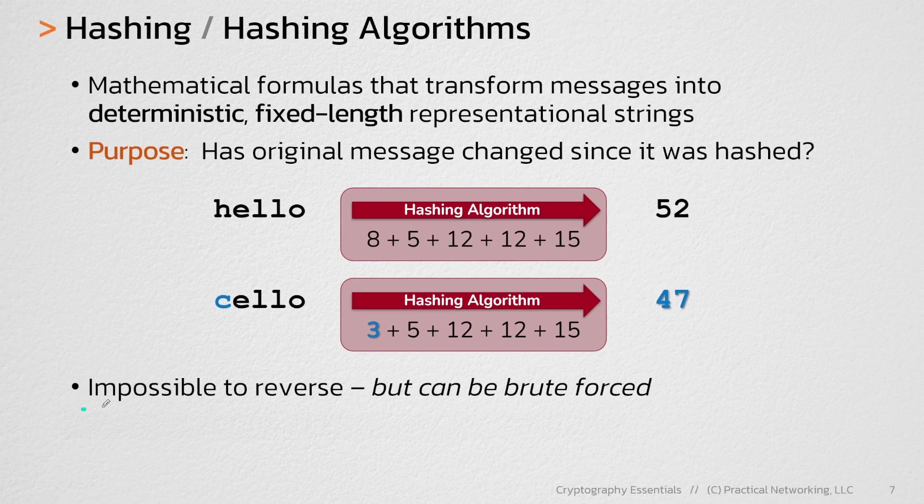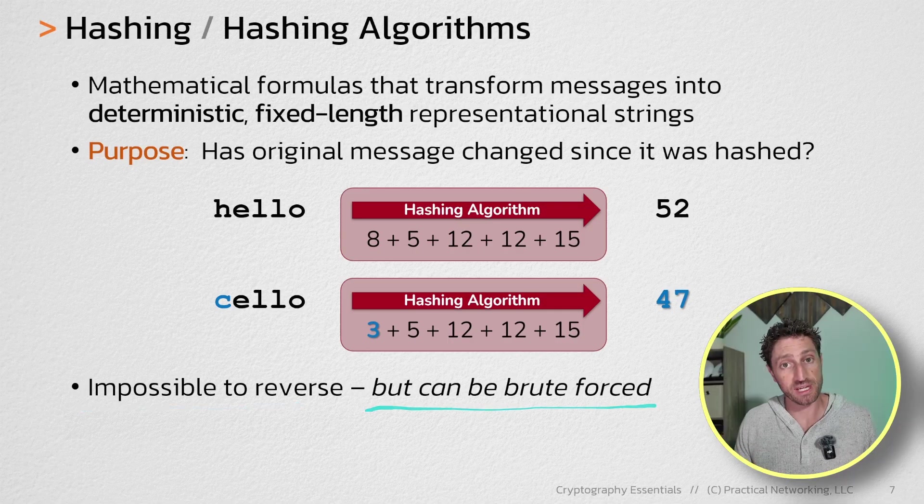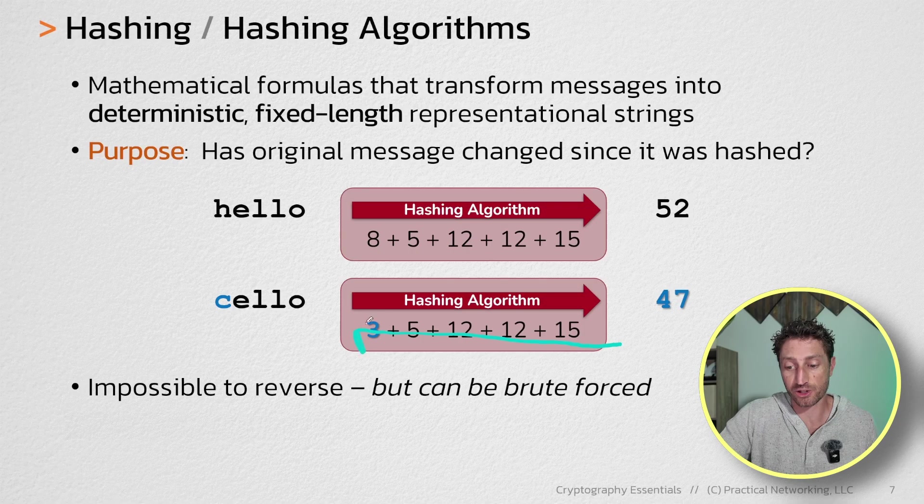Hashing is impossible to reverse, but it can be brute forced. What that means is if I give you the digest of 47, it's impossible for you to reverse engineer the calculation to end up back at the original message of cello.